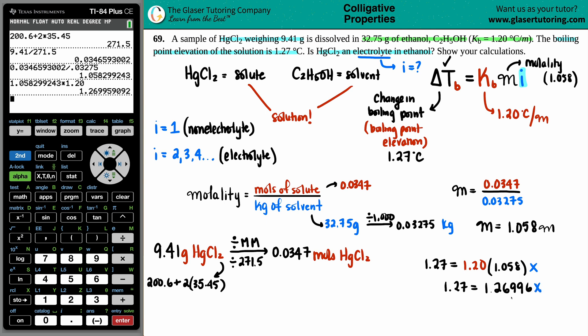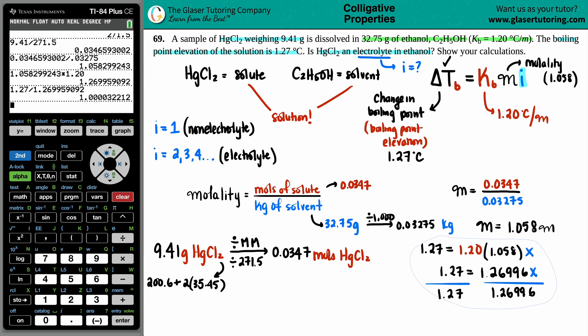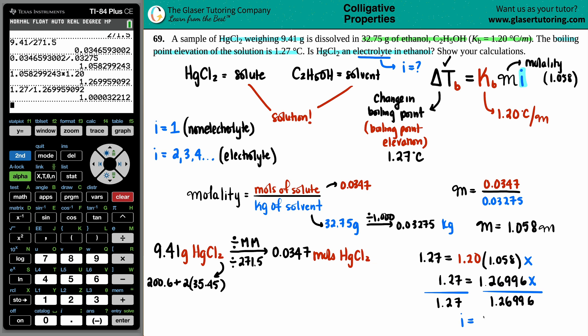Solve for X. You know what to do. We're going to divide both sides. You probably already know the answer by this amount. And we get 1.27 divided by this number. And the X value, which remember, is the Van't Hoff factor. That's the I value. The Van't Hoff factor is 1.